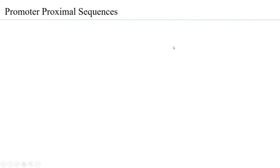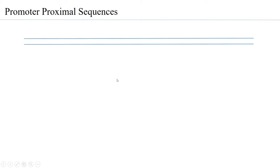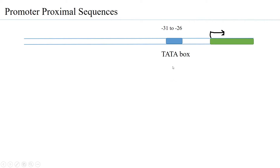When you have a gene that has to be transcribed, upstream of this gene at around minus 31 to minus 26 base pairs, you have the TATA box. This is where the TATA binding protein of the TF2D complex binds and initiates the process of forming the pre-initiation complex. For many genes in higher eukaryotes, the presence of elements upstream of the TATA box has helped in positioning or loading of the entire transcription machinery onto the promoter region.